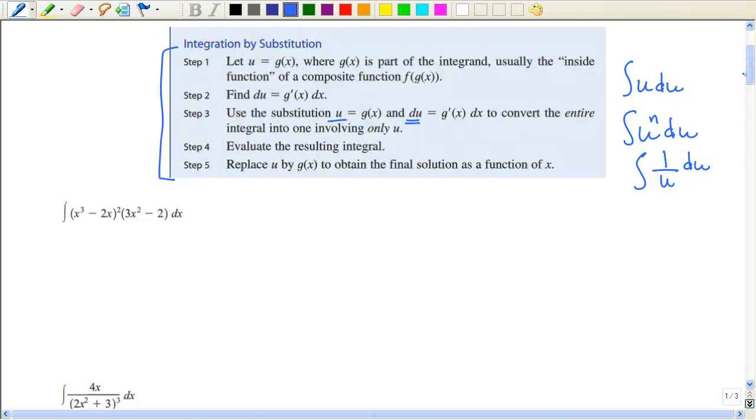This first one, we have these two functions being multiplied together. You might notice that this one has a square. So that would be the more complicated function. Let's let u be the inside function. So let's let u be x³ minus 2x and then take the derivative. So du would be 3x² minus 2 dx. Now this is where you kind of look and see if you can play a matching game.